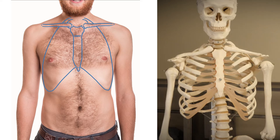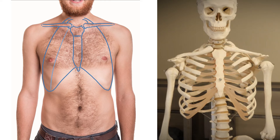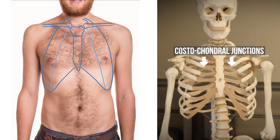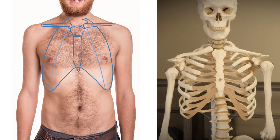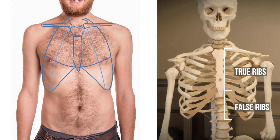Now we have the overall structure of the rib cage we can add some more details. For example, most ribs attach to the sternum by a costal cartilage. These start off narrow and get increasingly wide. So if you add an oblique line to either side of your rib cage you can roughly mark out the position of these joints between the ribs and their cartilage — what we call the costochondral junctions. Remember, the cartilage of ribs 1 to 7 articulate directly with the sternum and we refer to them as true ribs. However, ribs 8 to 10 articulate with the cartilage of the costal margin and are known as false ribs.